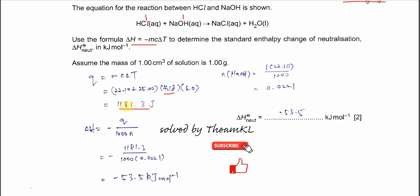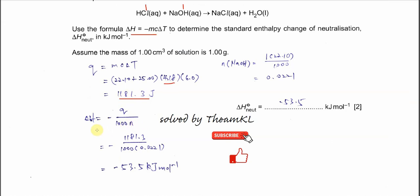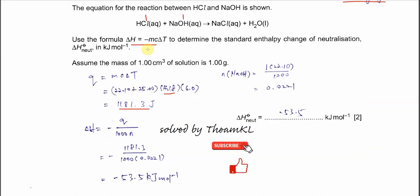Then we calculate the enthalpy change of neutralization: ΔH = −q / (1000 × n). We divide by 1000 to convert joules to kilojoules. The moles of NaOH (limiting agent) = 1 × 22.1 / 1000 = 0.0221 mol. Substituting: ΔH = −1181.3 / (1000 × 0.0221) = −53.5 kJ/mol.